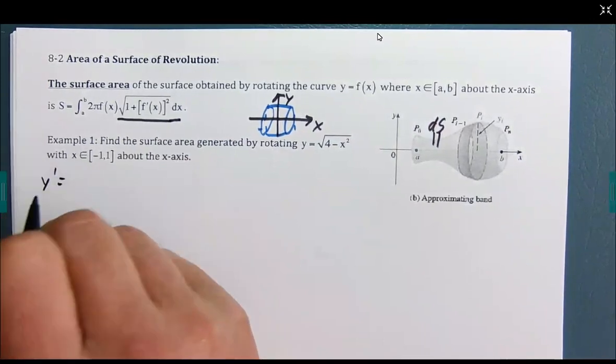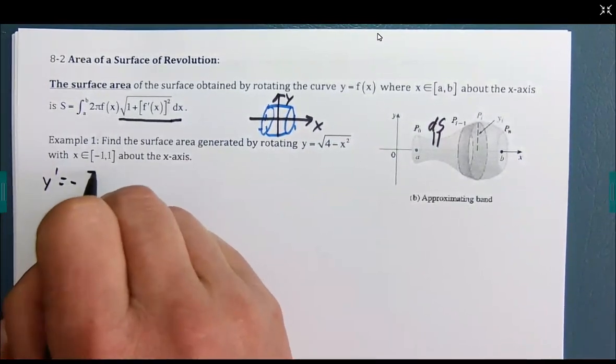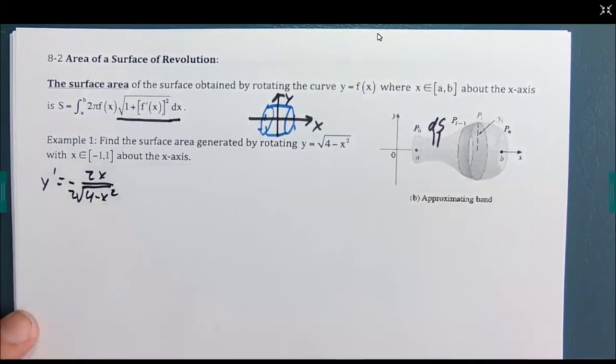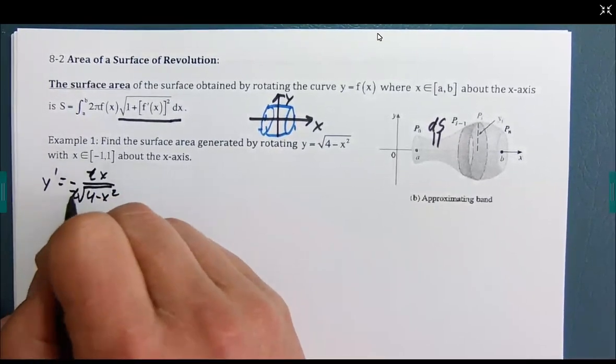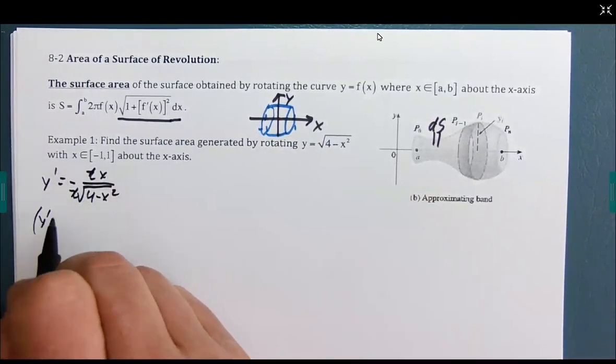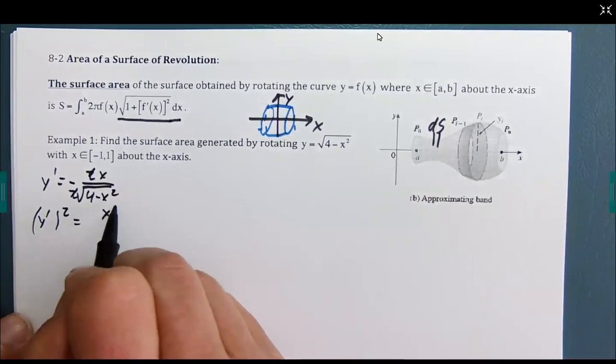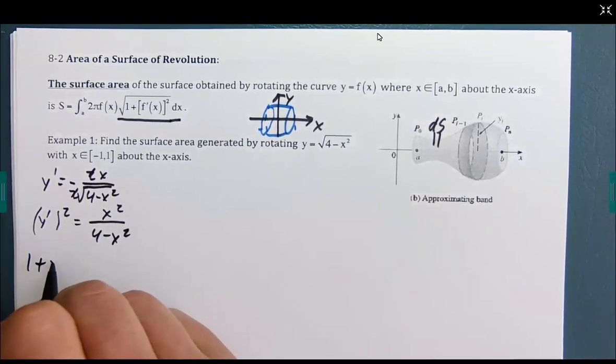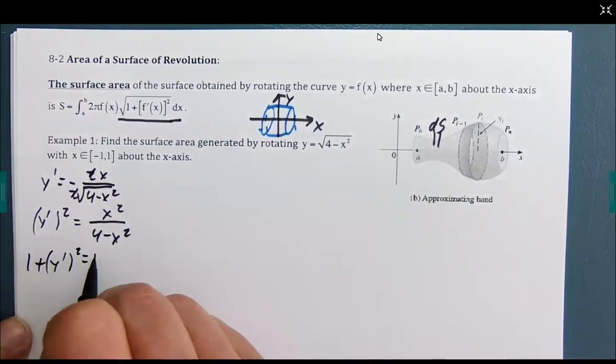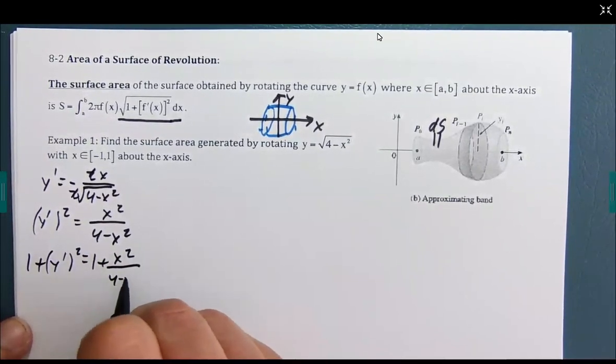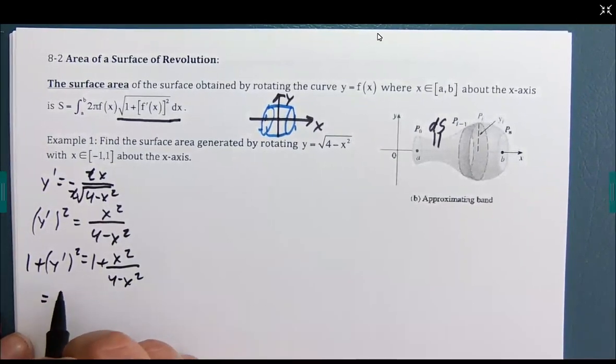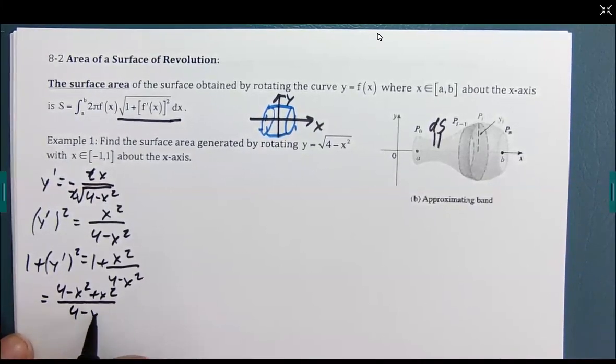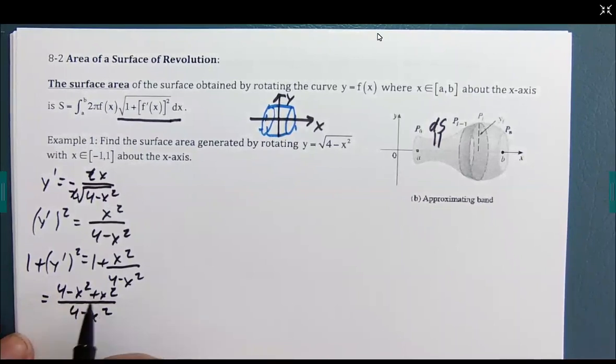I'm going to dig this part out first. y prime is going to be -2x over the square root of 4 minus x squared for the 2 out in front. I'm going to notice that the 2s reduce. So, y prime squared, that negative goes away. We end up with x² over 4 minus x². 1 plus y prime squared is 1 plus x² over 4 minus x².